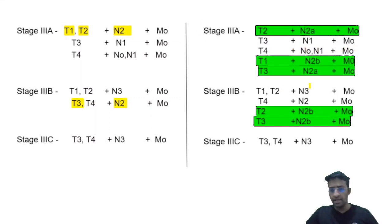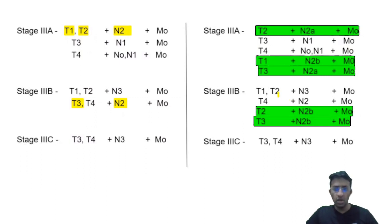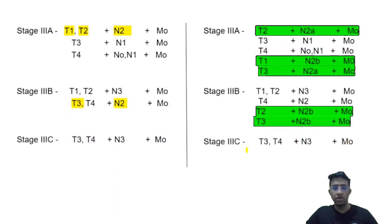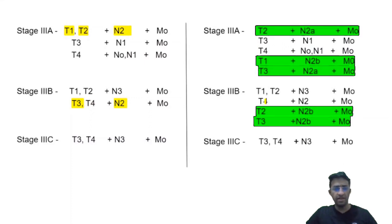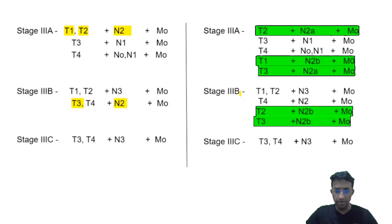The N3 staging is also similar between the 8th and 9th editions. T1, T2, N3, M0 comes under stage 3B, and T3, T4, N3, M0 comes under stage 3C. Additionally, T4, N2, M0 is also part of stage 3B.